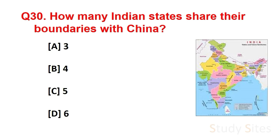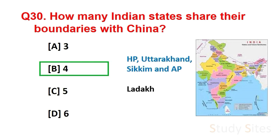Question number 30. How many Indian states share their boundaries with China? There are 4 states and 1 union territory that share their boundaries with China. They are Himachal Pradesh, Uttarakhand, Sikkim and Arunachal Pradesh, and the union territory is Ladakh.